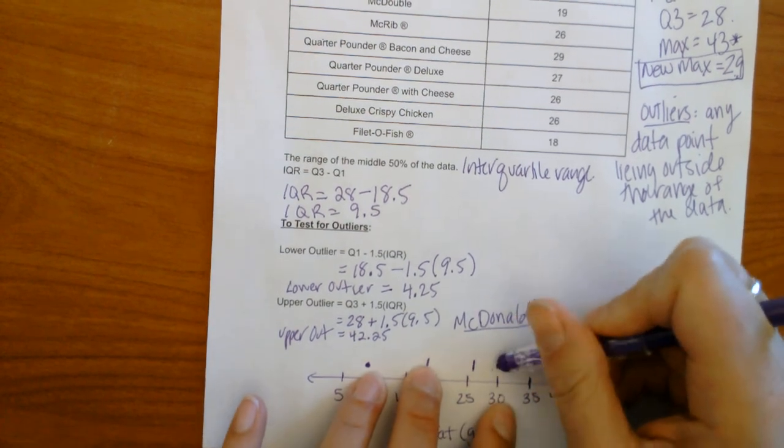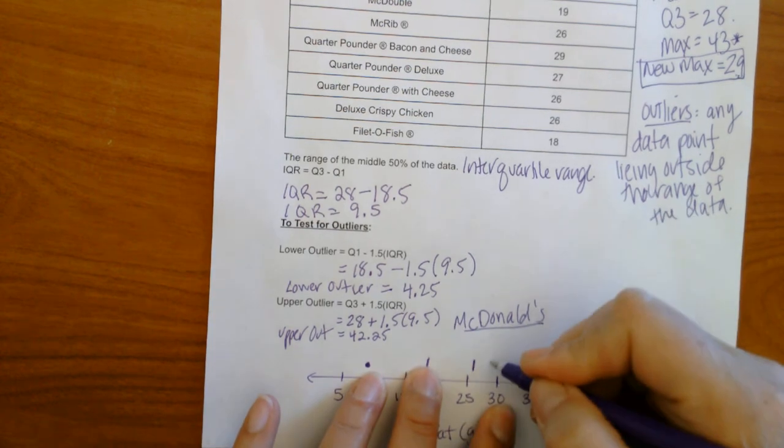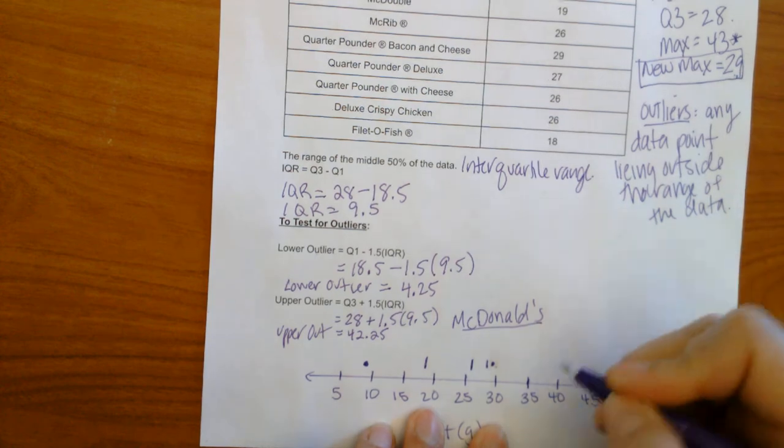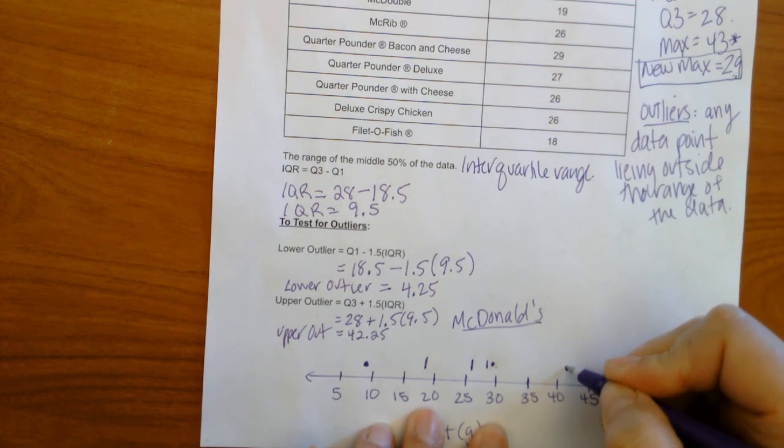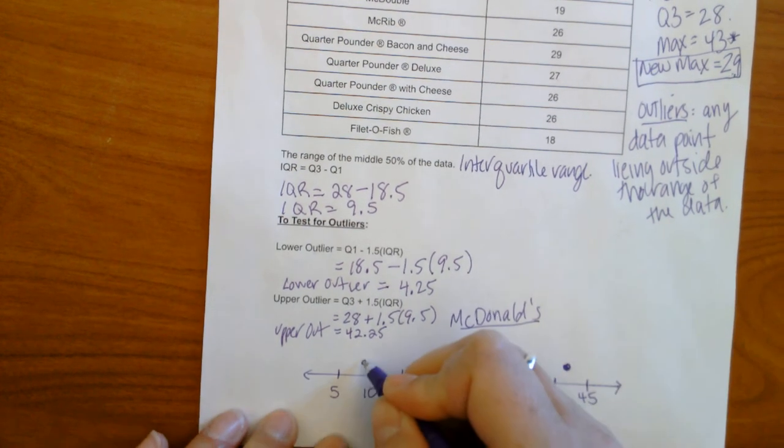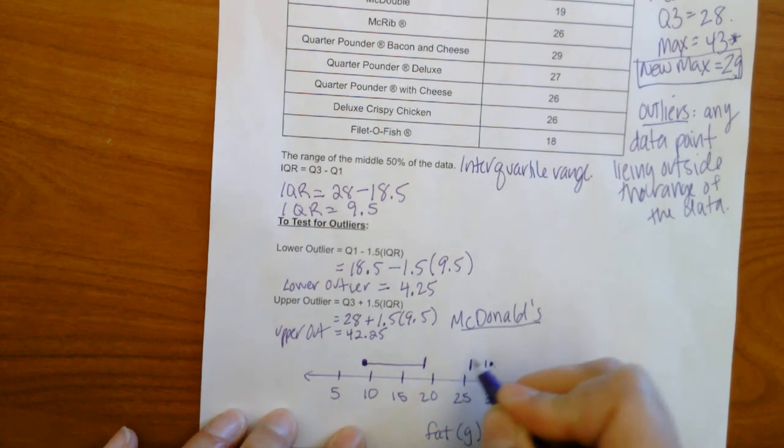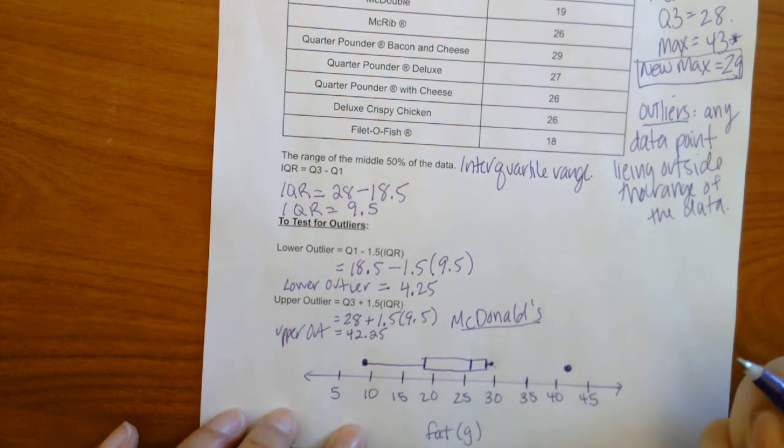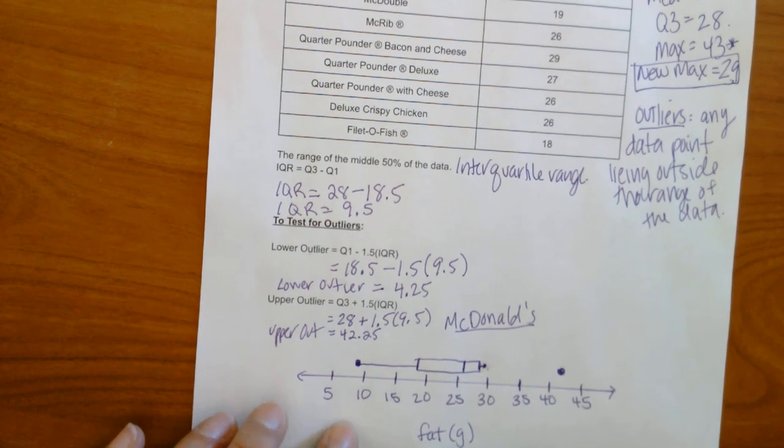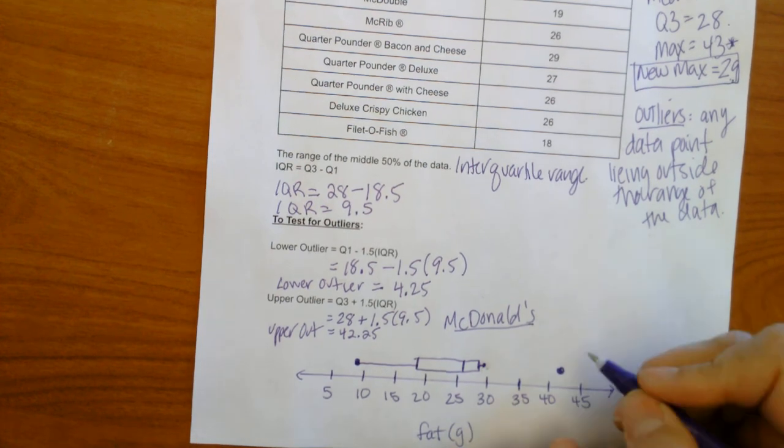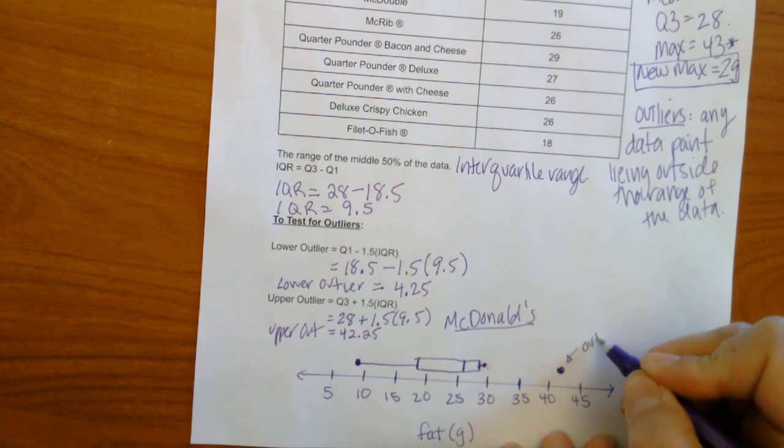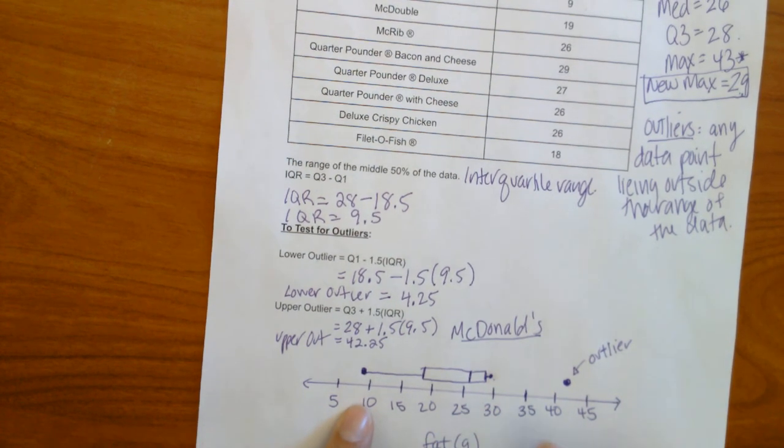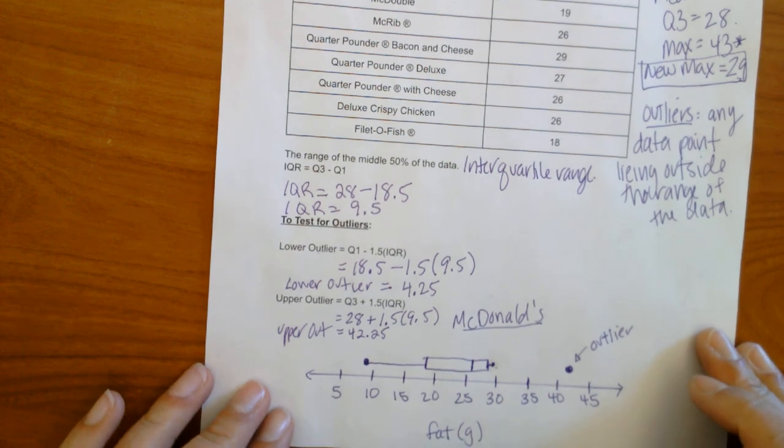Actually, I'm going to move them over just a little bit so it doesn't look like it's on 30. There we go. And now we're going to put a point for our max, which is 43. Okay. Now let's make a line. Let's connect our box. Let's put another little line. And now we can see that we have modified this to show that our outlier lies truly outside the range of the data. And there you have a modified box plot.